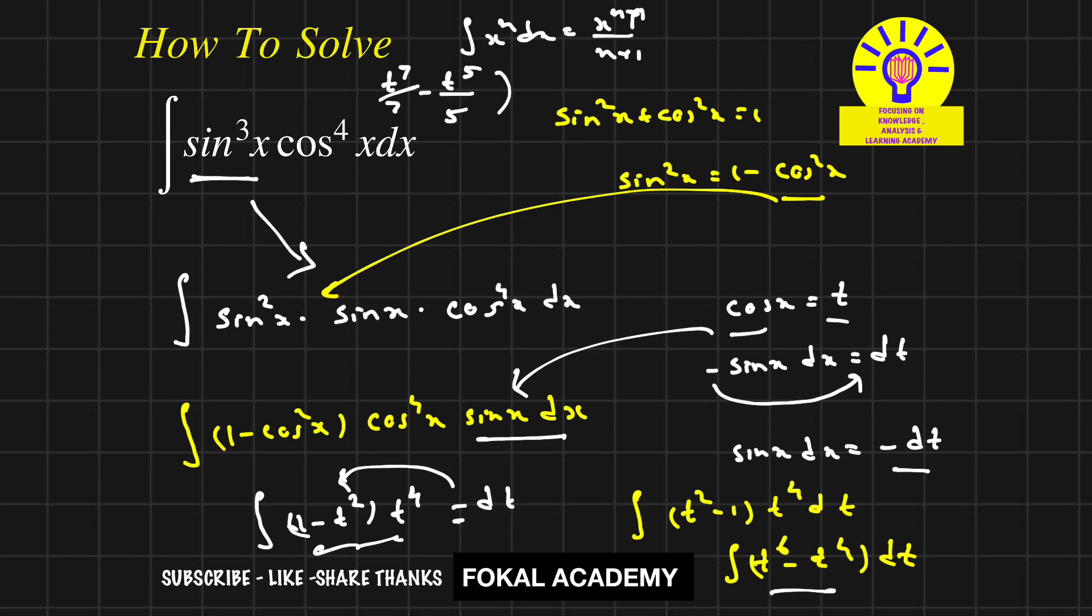But we know that t means cosx, so then the equation becomes cos⁷x/7 - cos⁵x/5, and this is the solution for the given problem.